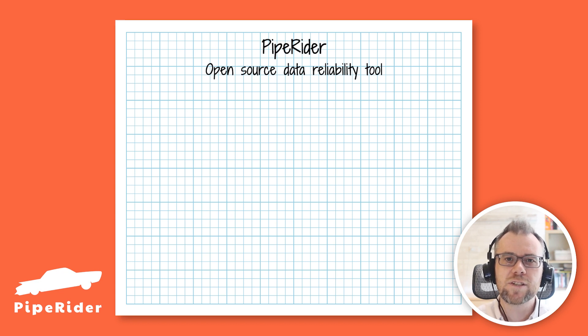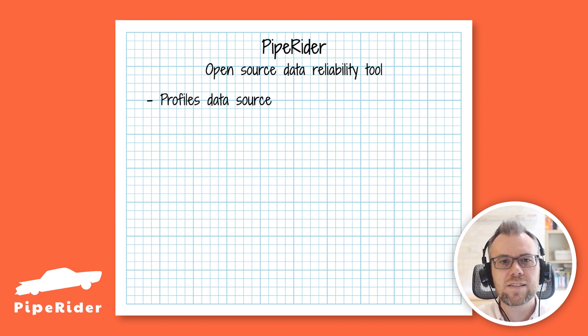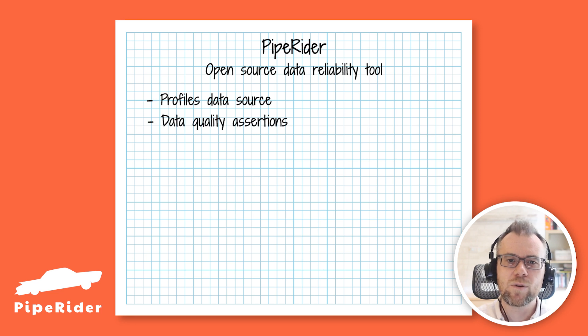PipeRider connects to an existing data pipeline, profiles the data, tests the quality of that data with data assertions, and produces an HTML report.